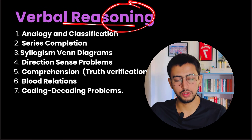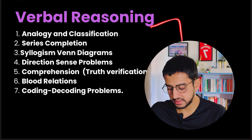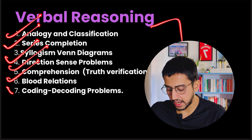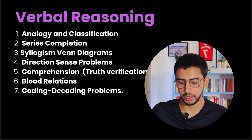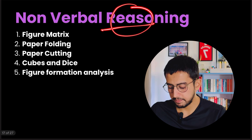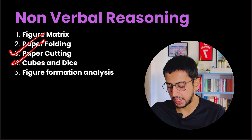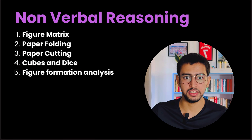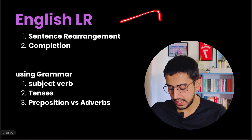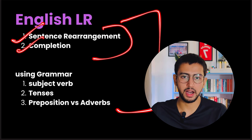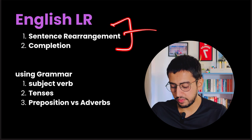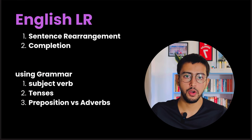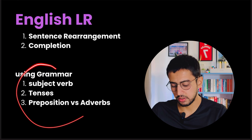For Logical Reasoning, the important topics are: verbal reasoning — analogy, series completion, syllogism, direction sense problems, comprehension, blood relations, and coding-decoding. In non-verbal reasoning: figure matrix, paper cutting, paper folding, cubes and dice, and figure formation analysis through symmetry or dot detection. In English, sentence rearrangement and completions are the most asked, often involving grammatical concepts like subject-verb agreement, tenses, prepositions versus adverbs, or modifiers.